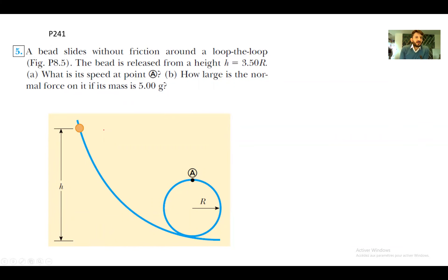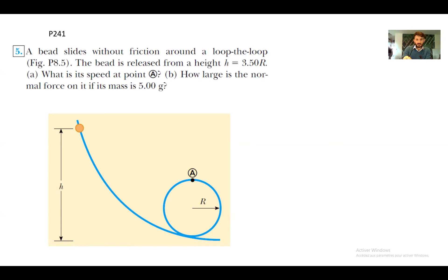Problem five, page 241. A bead slides without friction around a loop-the-loop as shown in the figure. We have an object of mass m that slides along this trajectory. The bead is released from a height h equals 3.5R without initial velocity. We have to calculate the speed when the object comes up at the top of the ring, position A.